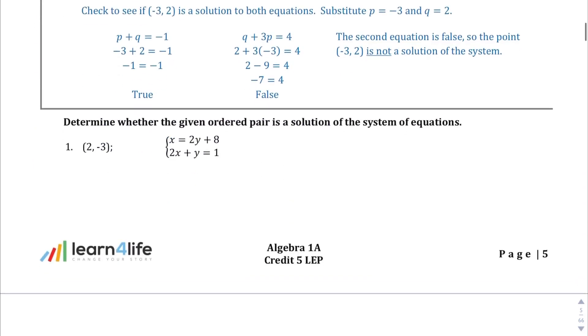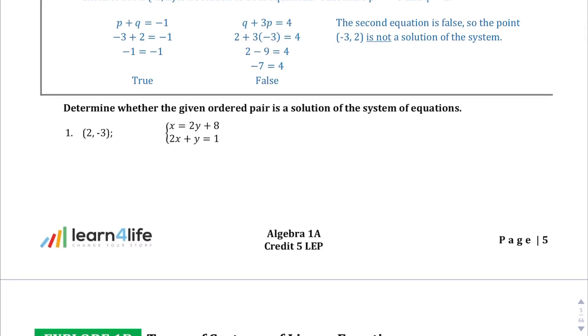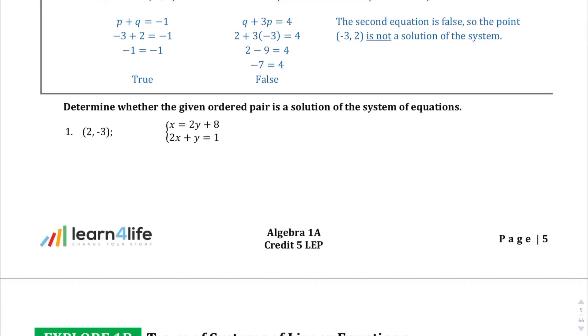I will let you read that Explore 1a section on your own, but in question 1 we are asked to determine whether or not this point right here is a solution to a system of equations. And all that means is the point (2, -3) on both of these lines here. So, let's do one at a time. Let's do equation number 1 first, and all we're going to do is plug it in, plug in the point into the equation, and if it comes out with a true statement, then we know it's on the line.